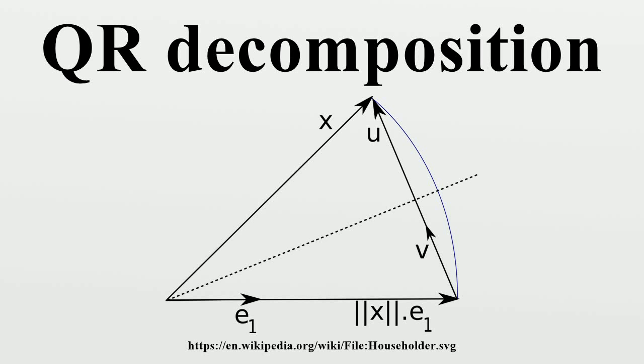In linear algebra, a QR decomposition of a matrix is a decomposition of a matrix A into a product A equals QR of an orthogonal matrix Q and an upper triangular matrix R.